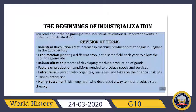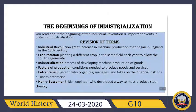The next lesson is 'The Beginning of Industrialization,' which is chapter 25. In this lesson you read about the beginning of the Industrial Revolution and discussed important events in Britain's industrialization. Industrial Revolution — a great increase in machine production that began in England in the eighteenth century. Crop rotation — a method of planting a different crop in the same field each year to allow the soil to regenerate. Industrialization — the process of developing machine production of goods.